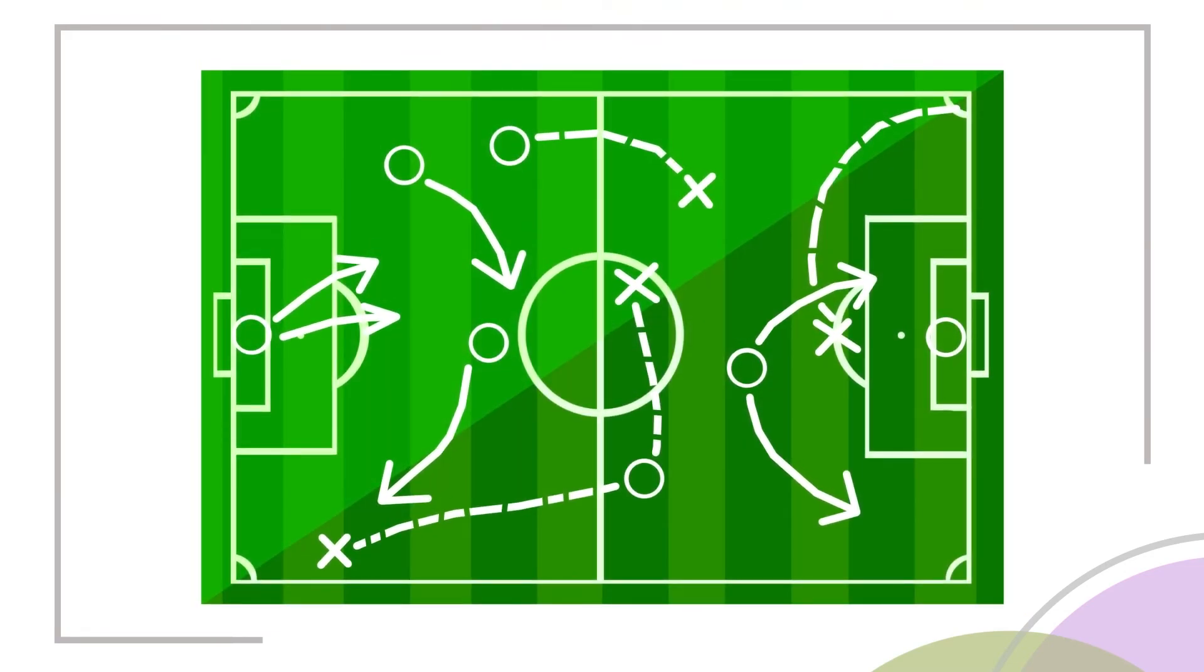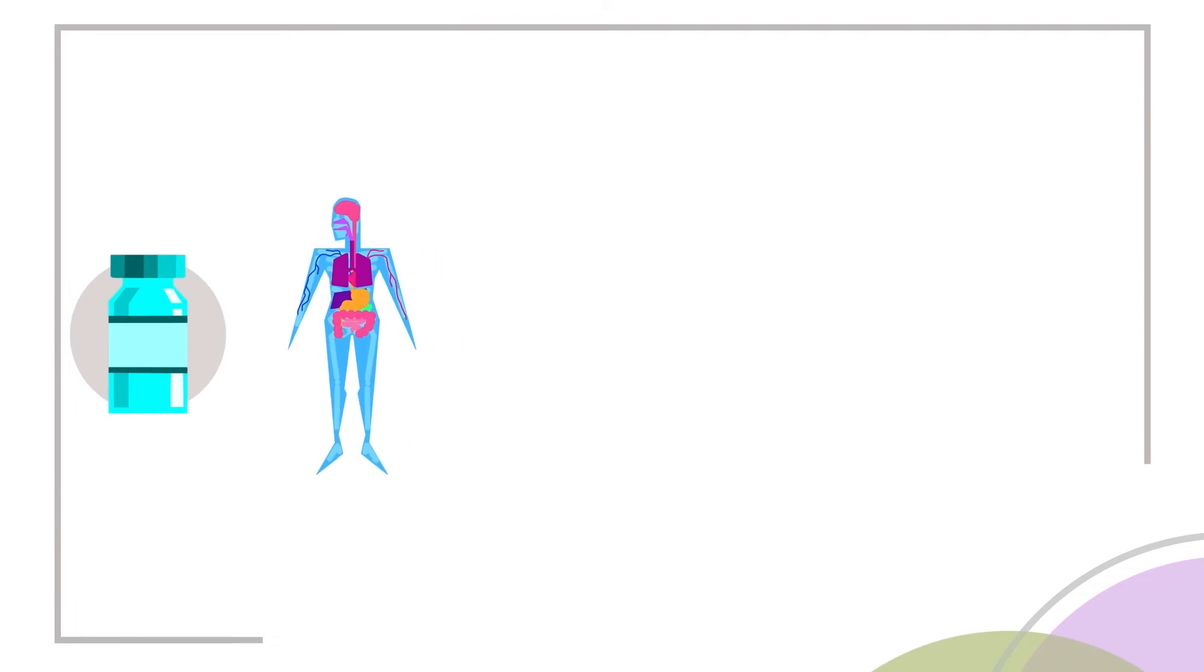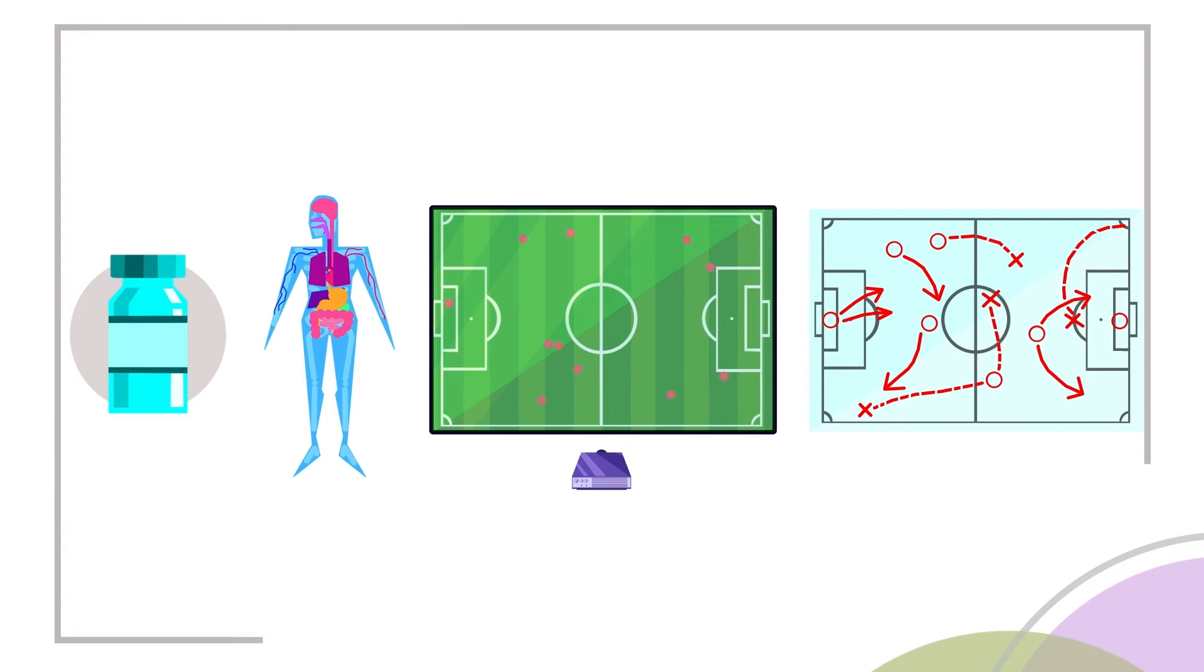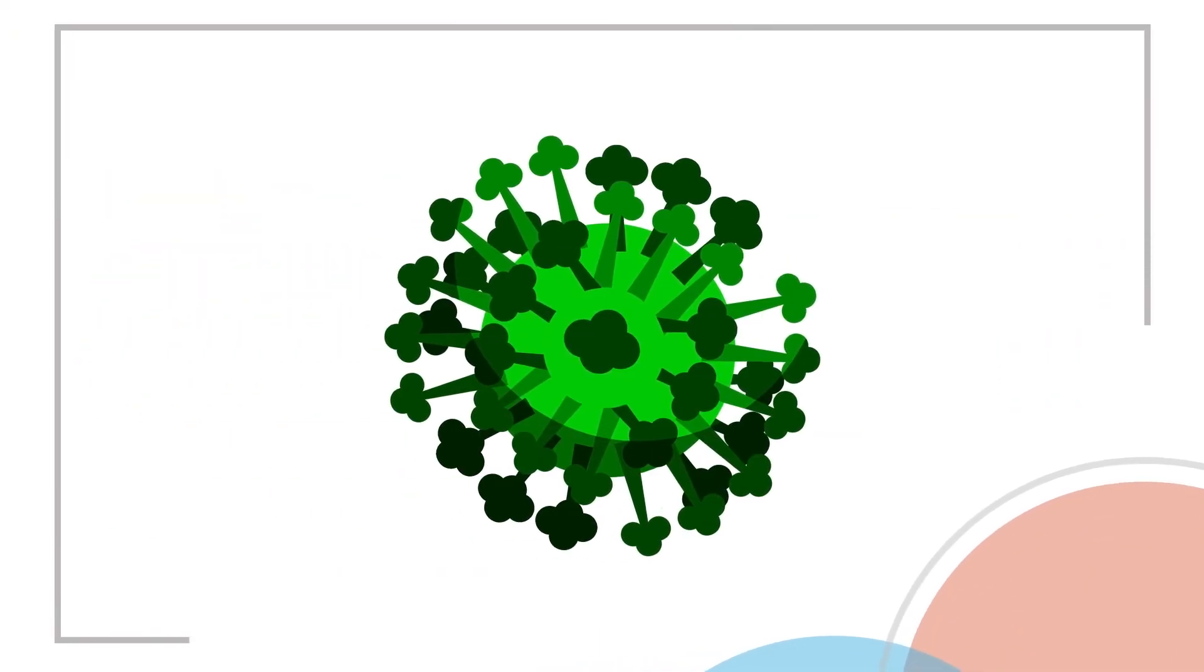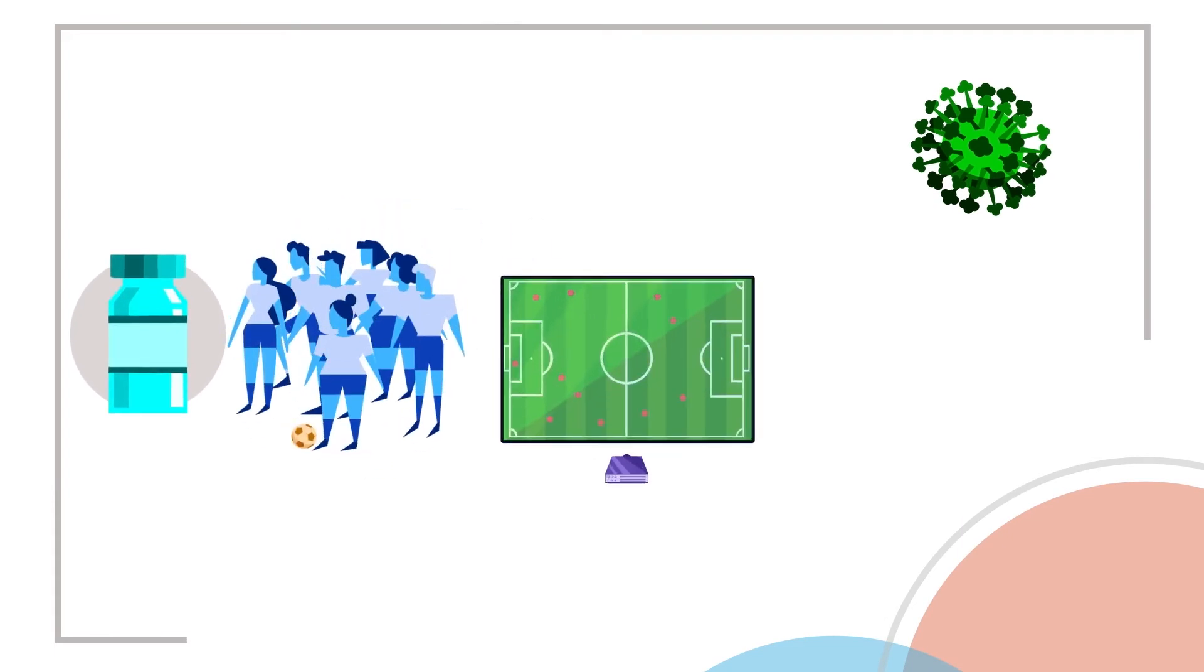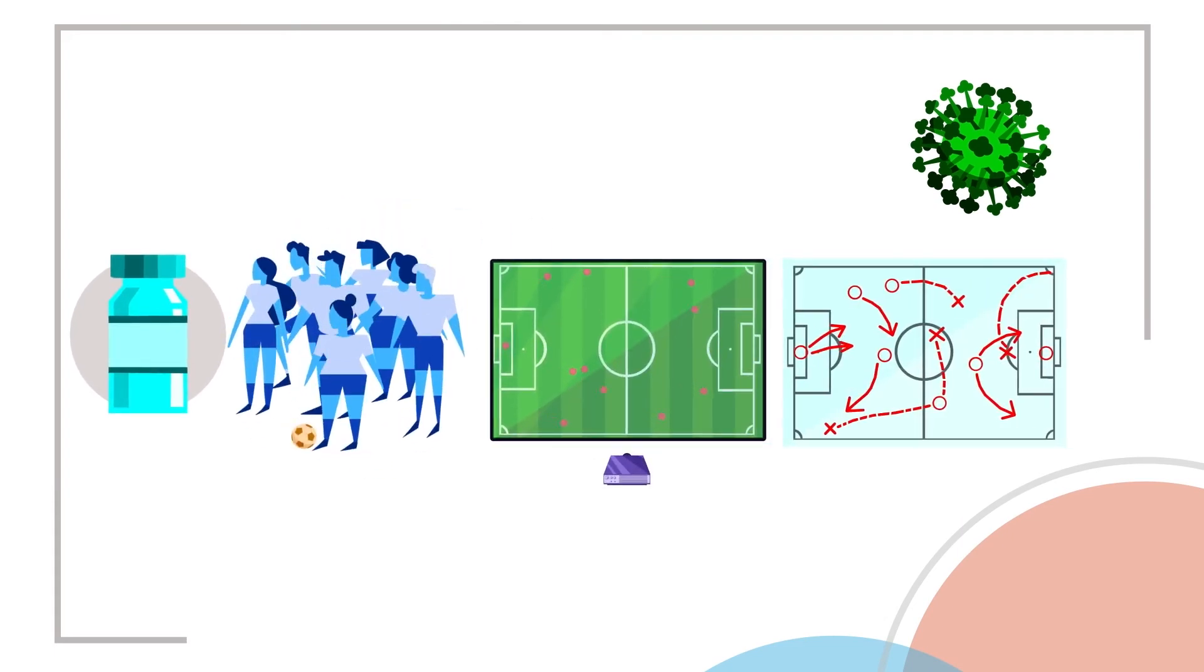In the same way, vaccines give your immune system the film it needs to create and practice a game plan for your upcoming opponents. Let's take the flu as an example. Each year, the new flu vaccine can show your team, your body's immune system, team flu's new weaknesses.